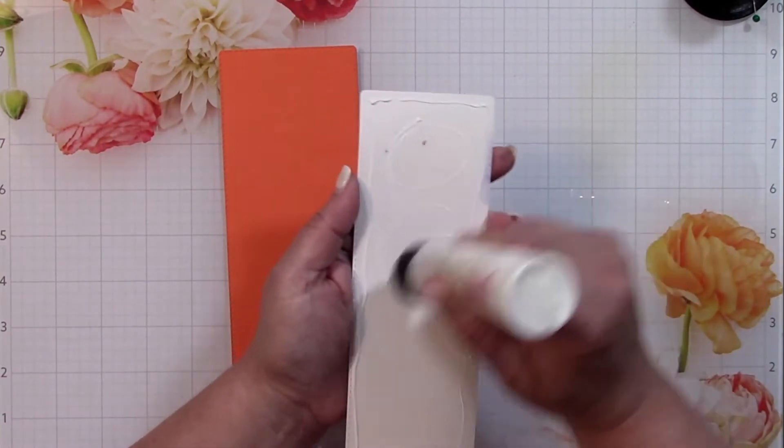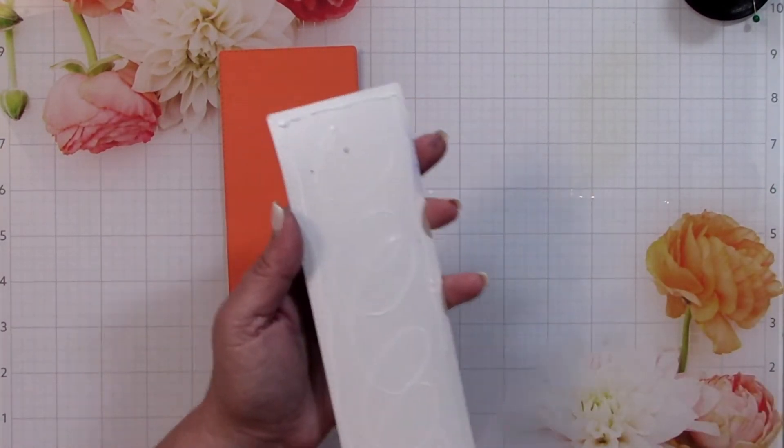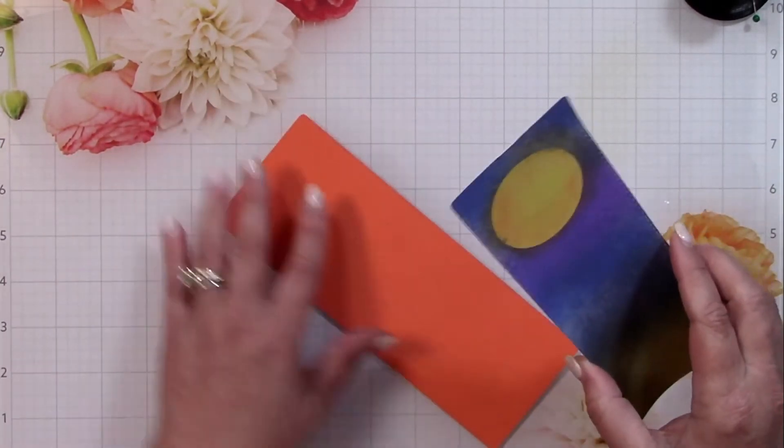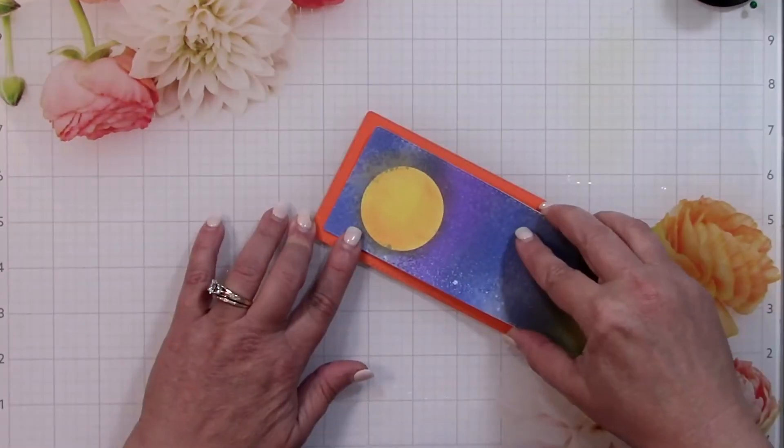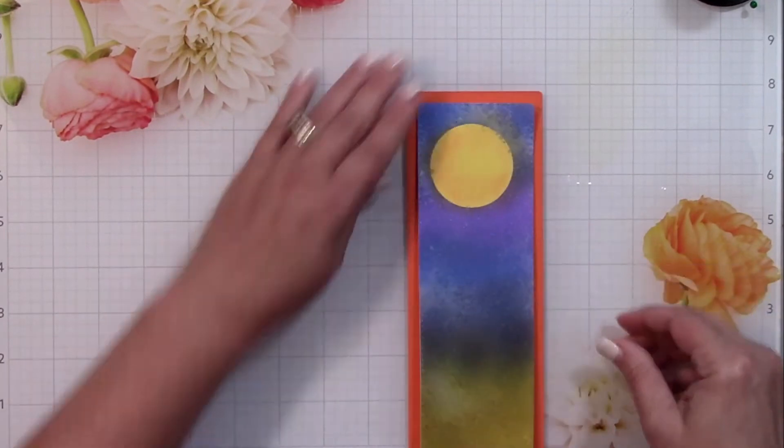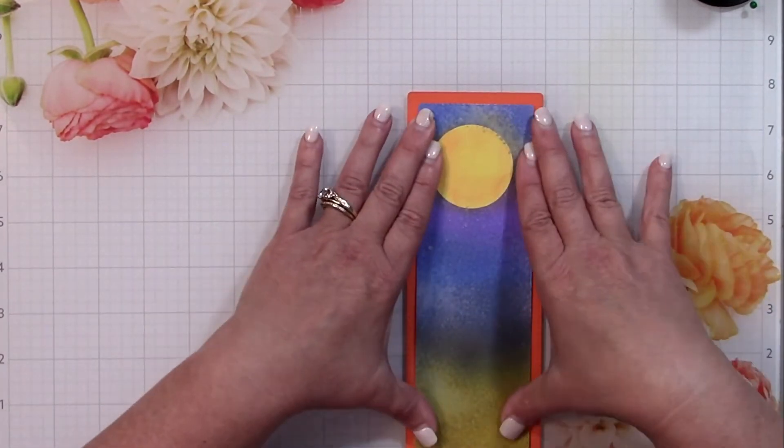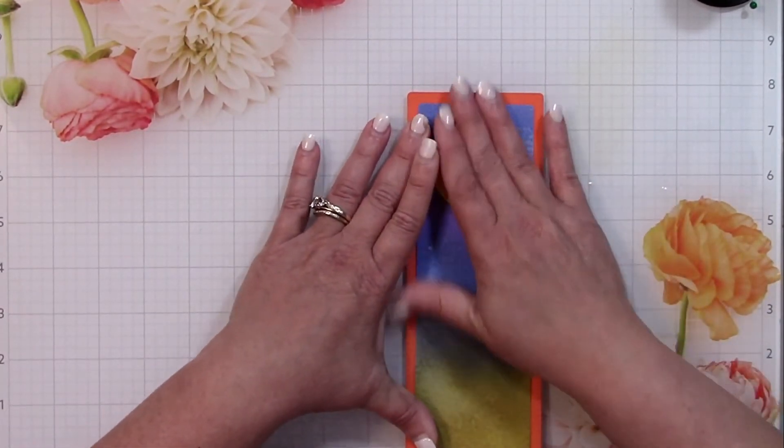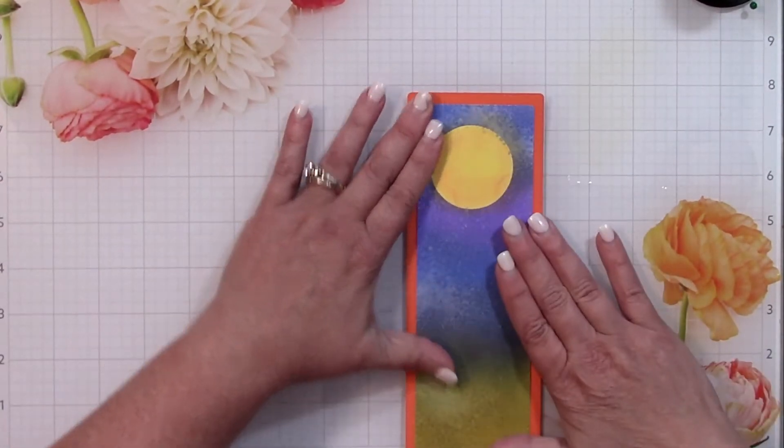I let that dry and while I was doing it I cut out a new panel in orange using the slimline die. This is the second largest die that I used in the set, and then on top of that I took the panel that I was working on and cut that out of the third largest die so that I could stack these one on top of the other to create a mat.